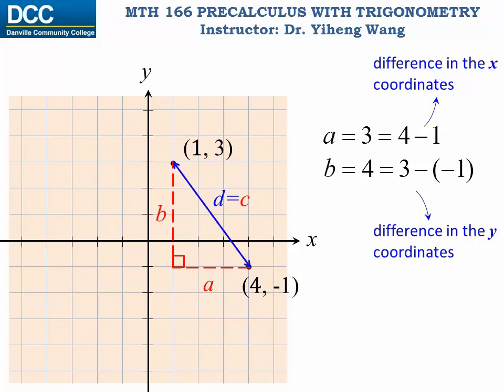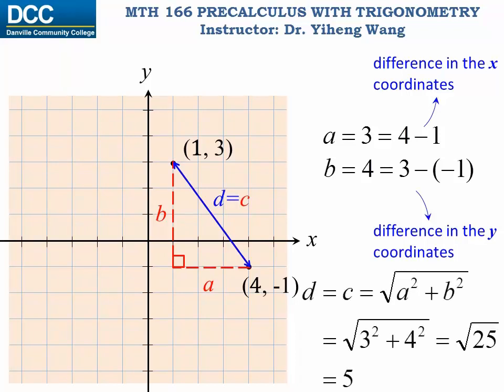Therefore, according to the Pythagorean theorem, the distance, which is the hypotenuse side of this triangle, equals the square root of a squared plus b squared, and that equals 5.